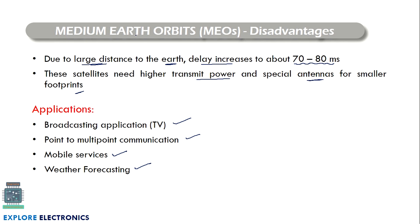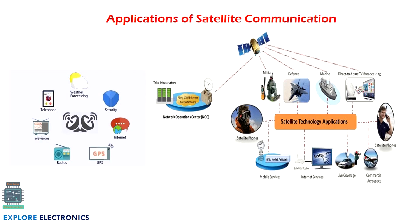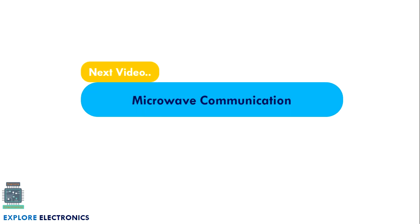A comparison table covers differences between GEOs, MEOs, and LEOs with respect to altitude, latency, earth coverage, number of satellites required, data gateways, antenna speed, and other factors. Satellite applications include weather forecasting, telephone communication, television and radio broadcasting, GPS services, internet, military defense, marine communications, DTH (direct-to-home) broadcasting, satellite phones, and commercial aerospace. In the next video we will look at microwave communication, its elements, and different types. Thank you.